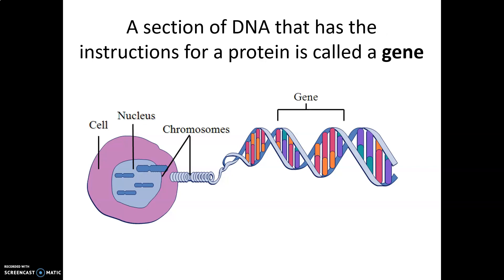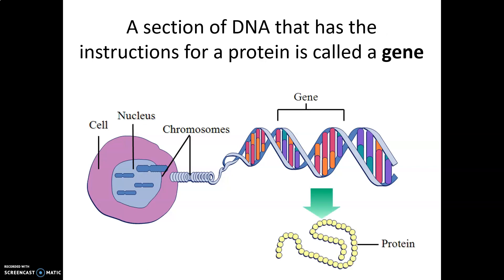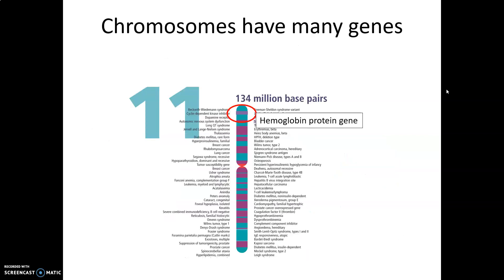Genes are simply sections of DNA that have instructions for making a protein. Chromosomes have thousands of genes. In the background, you can see some of the identified genes on this single chromosome. Circled here in red is one particular gene — the hemoglobin protein gene. This gene contains instructions for making one of the hemoglobin proteins.